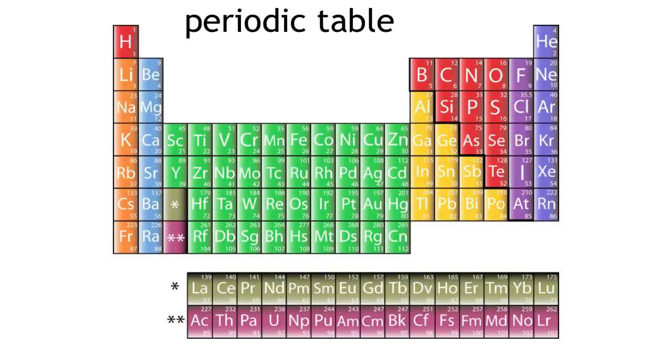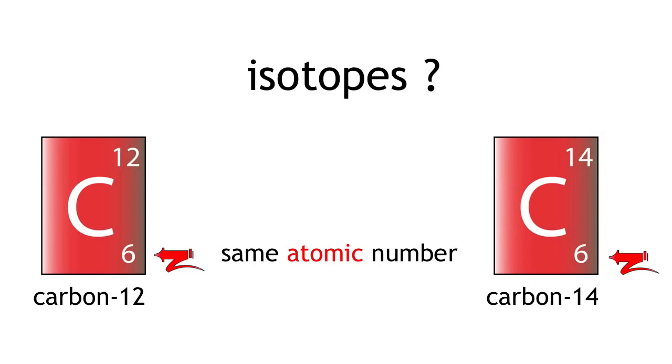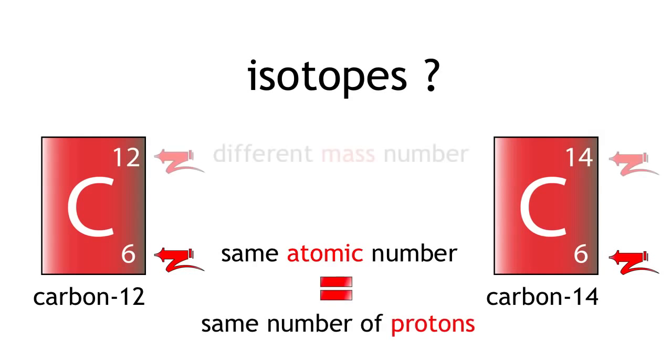Different isotopes of elements do not have separate positions on the periodic table. They occupy the same spot because they have the same number of protons. What about carbon-12 and carbon-14? Both carbon-12 and carbon-14 have the same atomic number which means they have the same number of protons but they have different masses.